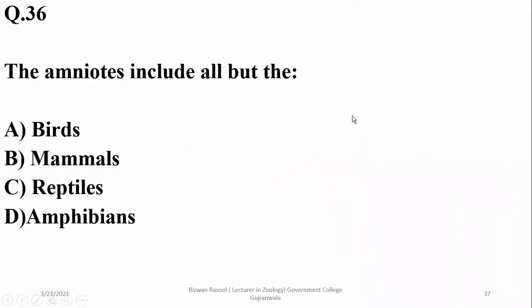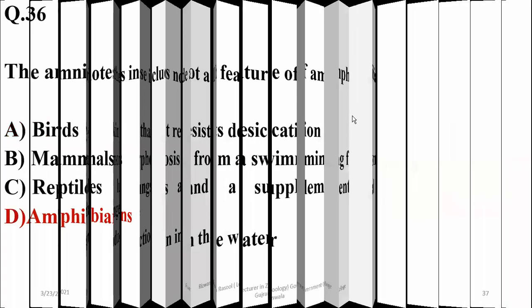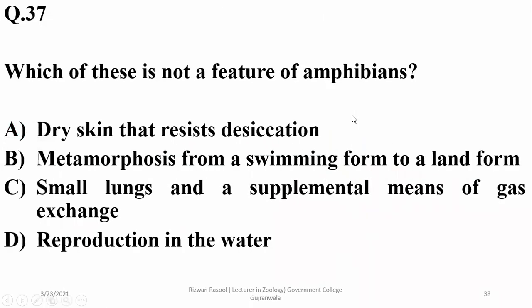Question twenty-nine: the amniotes include all except amphibians — amphibians are anamniotes. Question thirty: dry skin that resists desiccation is not a feature of amphibians — it is found in reptiles.